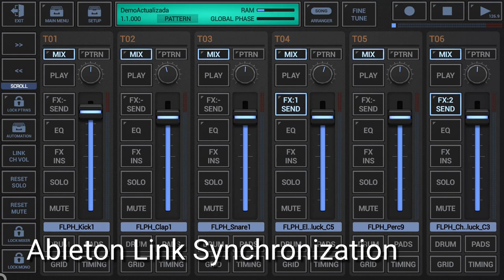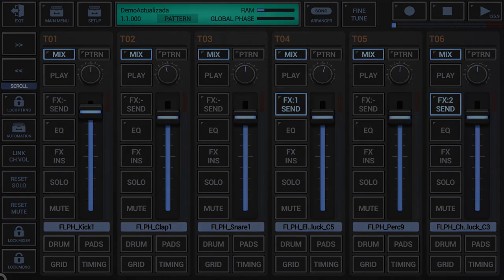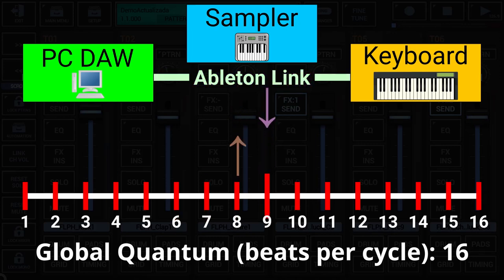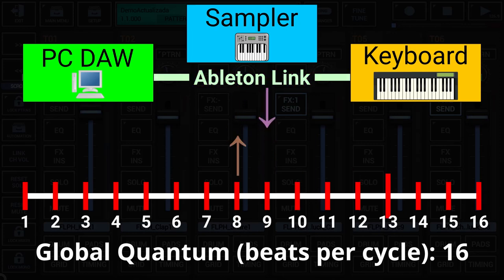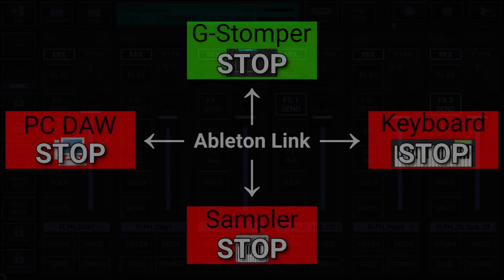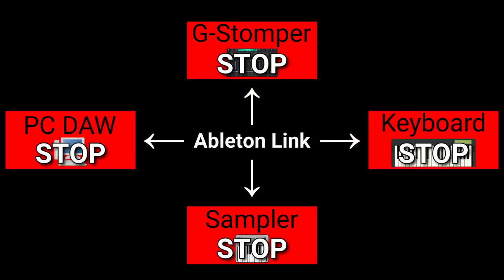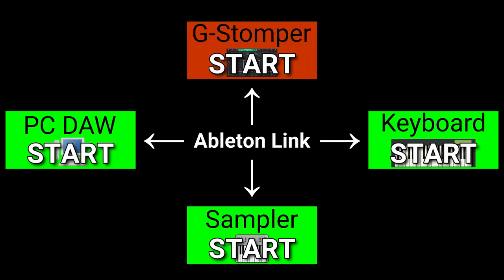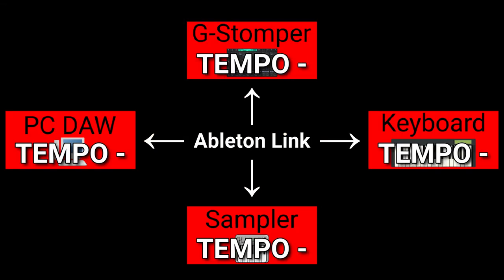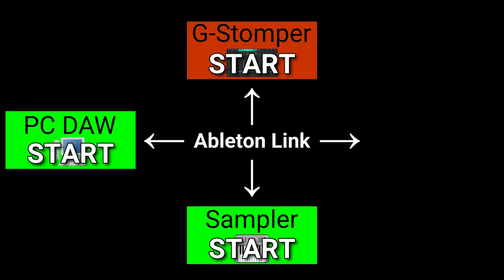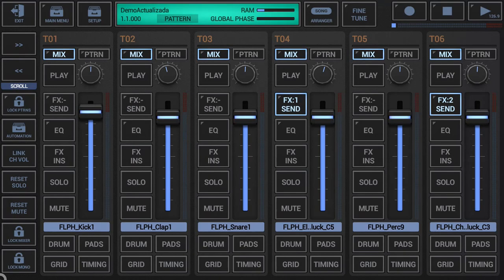Ableton Link Synchronisation: if you join an Ableton link session, the global quantum beats per cycle is used as a loop cycle measure to be synchronised with the Ableton link session. Ableton link is a technology that synchronises musical beat, tempo, phase and start-stop commands across multiple link-enabled applications on one or more devices. Applications discover each other automatically on a local wireless network, forming a musical session where each participant can perform independently. Anyone can start or stop, change the tempo, or join and leave without disrupting the session. Ableton link can be enabled in the global sequencer settings.